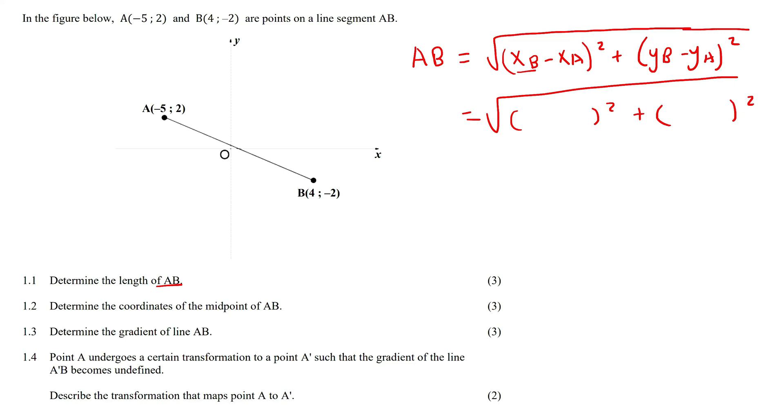It says take the x value of point B, that's 4, then minus, and then we must minus this one so we put minus 5. Then we're going to take the y value of point B which is this one, then minus, and then we're going to minus this one.